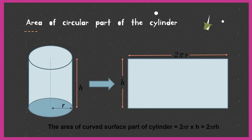Now let's find what parts we have in a cylinder. First, let us consider the curved surface area. I am going to show you how to find the area of this curved surface part. What I do is use a scissor or knife and cut it from one edge in a straight line, and when we open it up, you get a rectangle. The length of this rectangle will be 2πr, which is the circumference of the cylinder, and the width will be h, the height of the cylinder. So the curved surface area equals 2πr multiplied by h, giving us 2πrh.